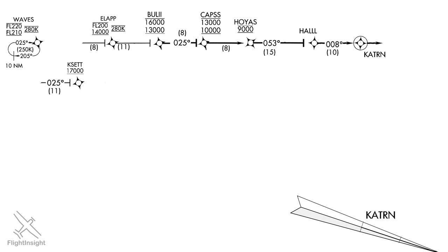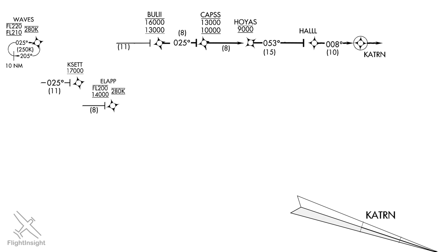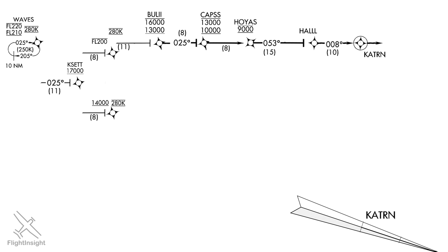The next fix is Cassette, with a bar underneath the 17,000 — a minimum altitude, meaning we need to cross at or above 17,000 feet. Next, have a look at ELAP. The minimum altitude is 14,000 feet, but there is also a maximum altitude of flight level 200. So there's a vertical corridor we must pass through when crossing this fix. There's also the mandatory speed of 280 knots again here.